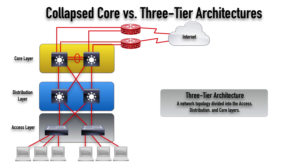This is how we're getting from our cubicle or office — we're plugging into the wall jack and getting back to the wiring closet at this layer. This is where these Ethernet switches live. However, we need to send traffic from one switch to another. Maybe there's a server connected to one switch and we're trying to reach it. We probably don't want a full mesh of interconnections between all our switches because that would be a lot of interconnections. Instead, we can use this three-tier architecture where our access layer switches connect up to distribution layer devices.